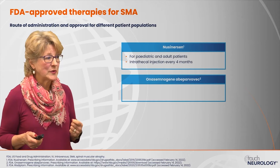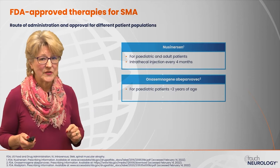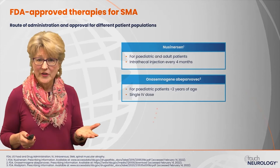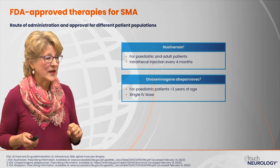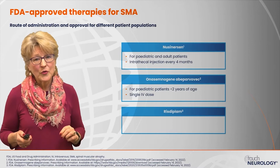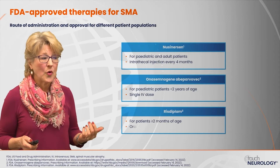Onasemnogene abeparvovec is currently indicated only for patients less than two years of age and is given via a single peripheral IV dose. Risdiplam has been most recently approved, currently for patients two months of age and older. Risdiplam is given orally as a once-a-day dose.